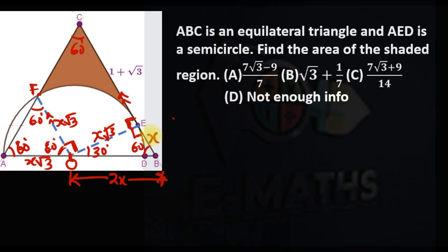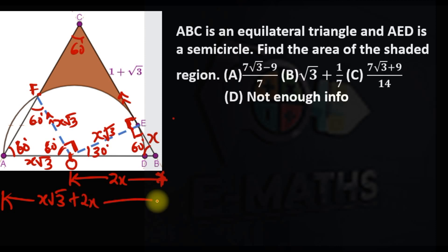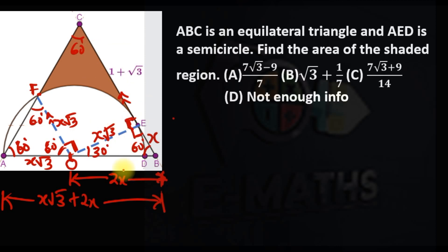The major thing we need to do is get the value of x. Remember this is an equilateral triangle and the total length of this equilateral triangle is x√3 + 2x. In any equilateral triangle all sides are congruent, and they gave us this side as 1 + √3 and this part as x, so the total length is x + (1 + √3), which equals x√3 + 2x.